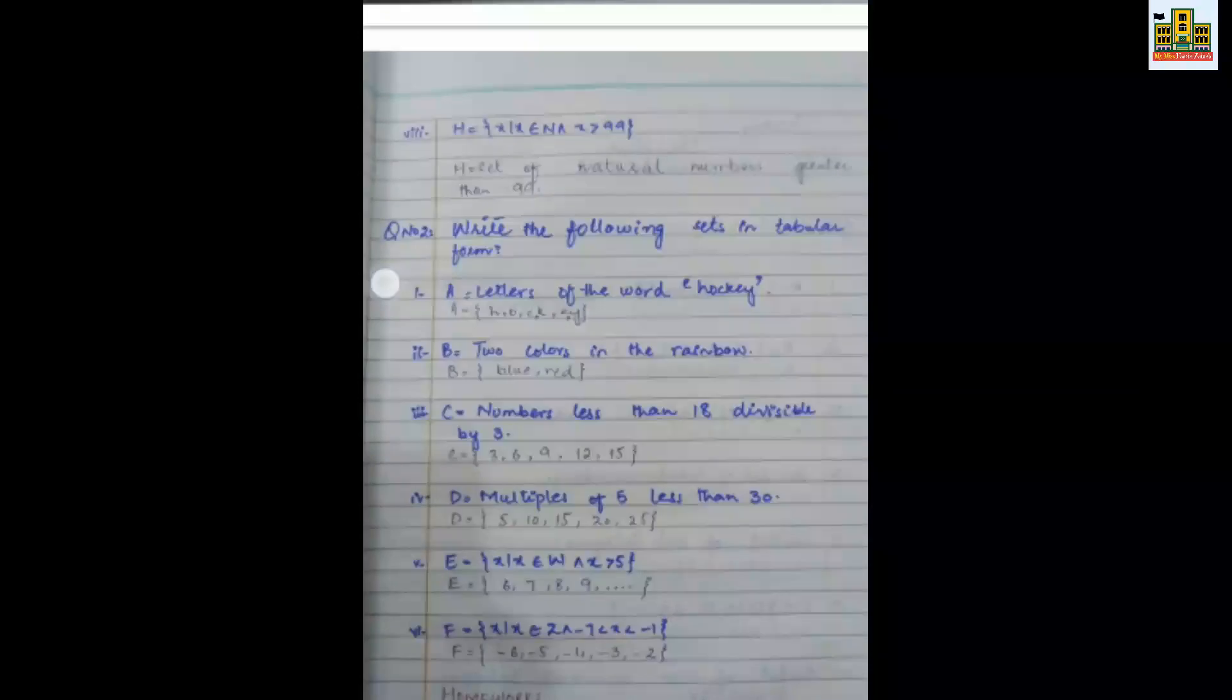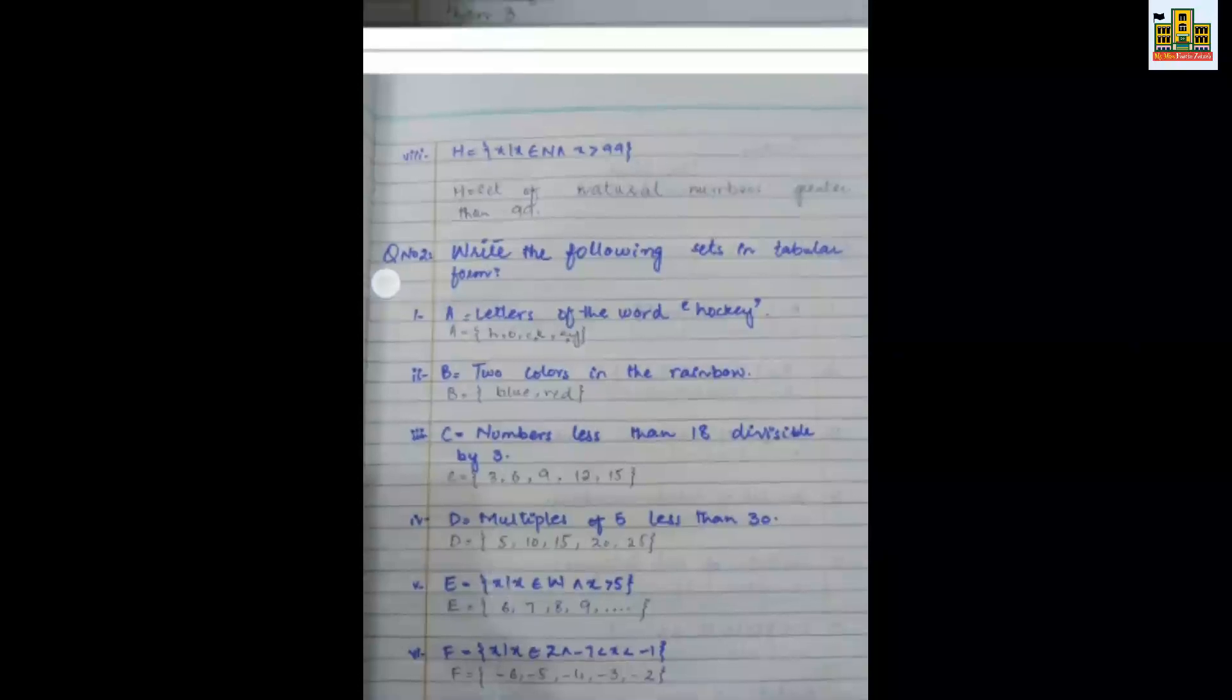Then you have to have a set of E, x such that x belongs to whole numbers and x is greater than 5. I mean 5 is greater than all numbers. You have to write 6, 7, 8, 9, and up to so on.